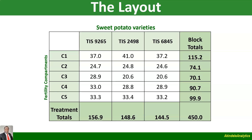The layout shows a table with treatments and blocks. You have block totals — for compartment one through compartment five. Similarly, for each treatment you have its total, and you have the grand total. The grand total is the summation of all individual observations; all block totals or all treatment totals will give you the same grand total.